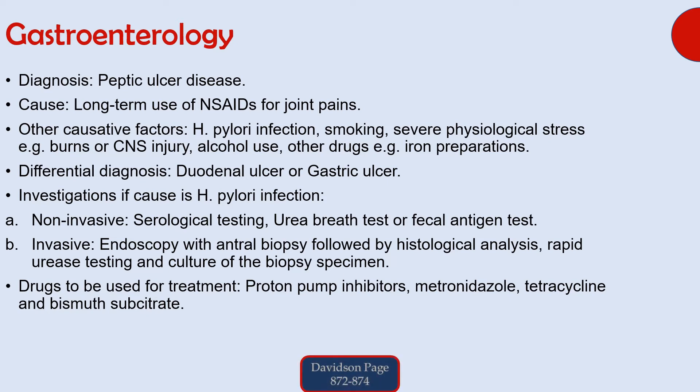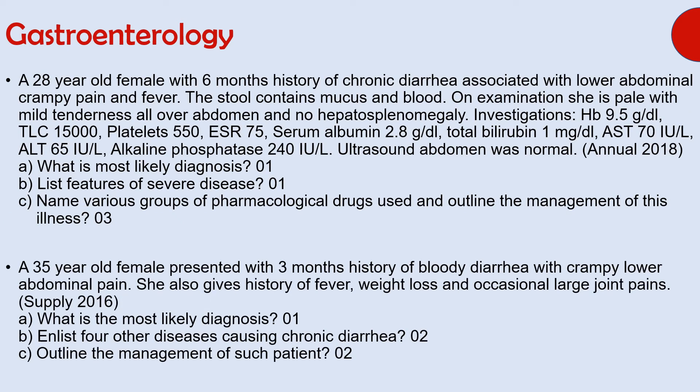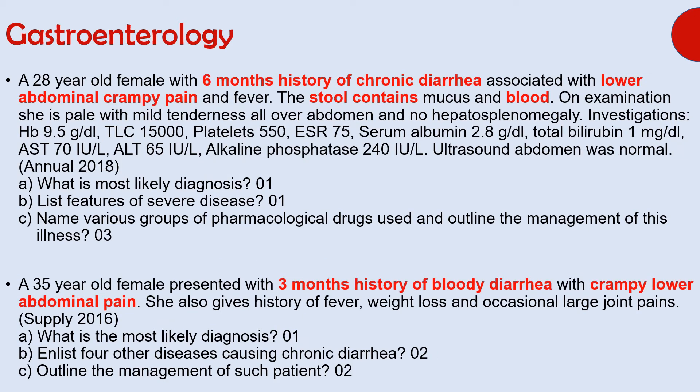Let's read the next question. The diagnosis is ulcerative colitis. Some important points to diagnose this condition are history of chronic bloody diarrhea and associated crampy abdominal pain. Ulcerative colitis is associated with many conditions, and one of them is arthritis, which can cause joint pains as seen in the second scenario.